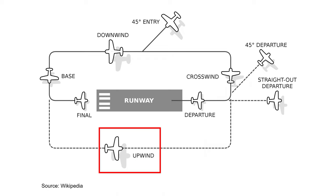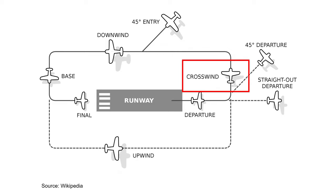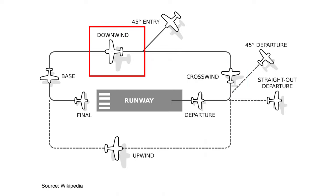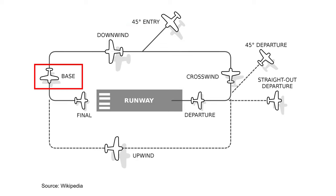The upwind leg is a course flown by aircraft parallel to the landing runway in the direction of landing traffic, and is typically flown at controlled airports and after the aircraft made a go around. The crosswind leg is a course that goes perpendicular to the takeoff runway. The pilot typically enters the crosswind leg after making the upwind leg. Then comes the downwind leg, which is a course flown parallel to the landing runway but in the direction opposite to the landing. Then there is a base leg and final approach leg. The final approach leg is the descending path after completing the base leg and extending to the point of touchdown.